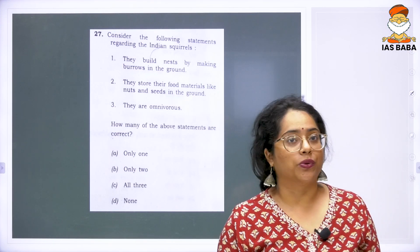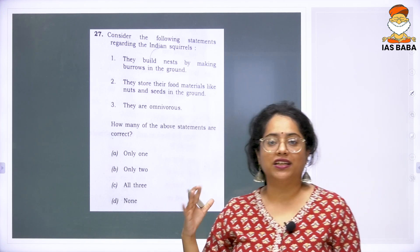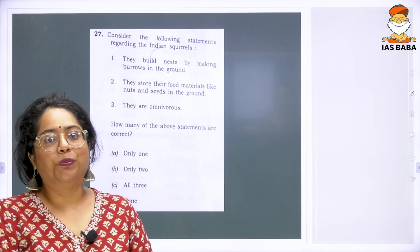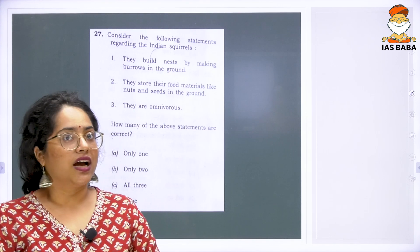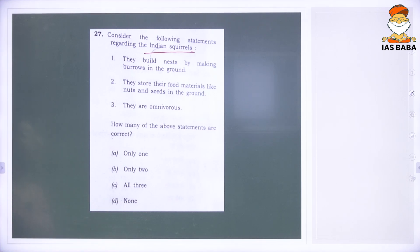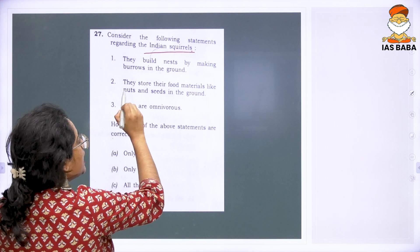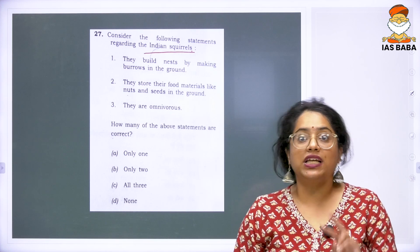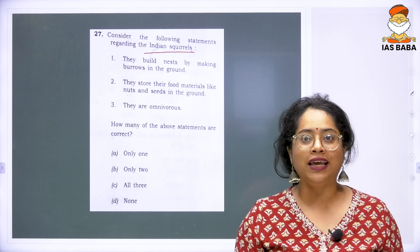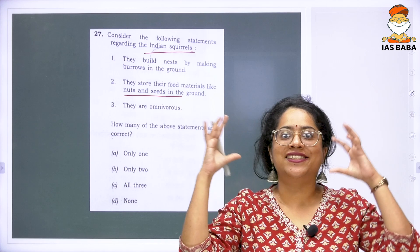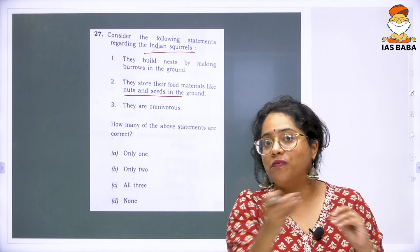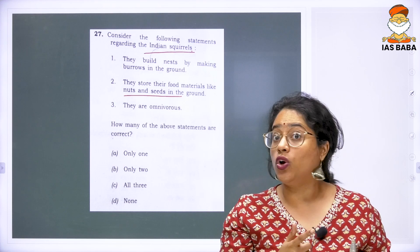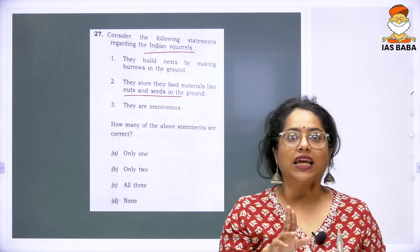Moving forward, the next question is about Indian squirrels. This was a doubtful question — different institutes gave two or three different answers — but now we have the UPSC key. The question considers three statements: they build nests by making burrows in the ground; they store food materials like nuts and seeds in the ground; and they are omnivorous. The second statement — storing food in the ground — was well known, as we have observed squirrels burrowing things into the ground, which also helps loosen the soil. That second statement is correct.